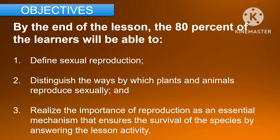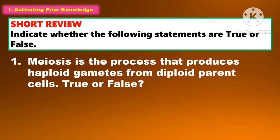For the objectives, by the end of the lesson, 80% of the learners will be able to: first, define what is sexual reproduction; second, distinguish the ways by which plants and animals reproduce sexually; and third, realize the importance of reproduction as an essential mechanism that ensures the survival of the species by answering the lesson activity.